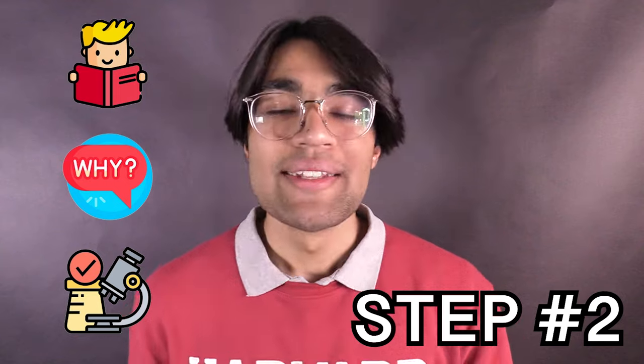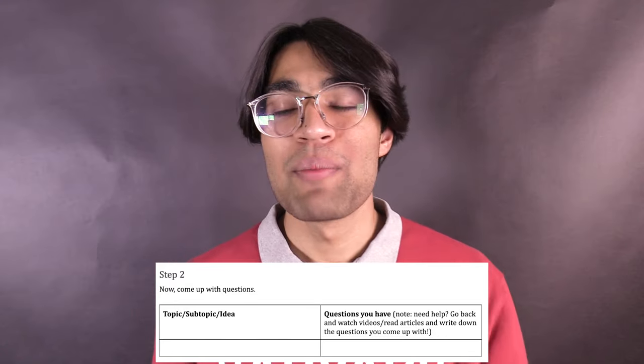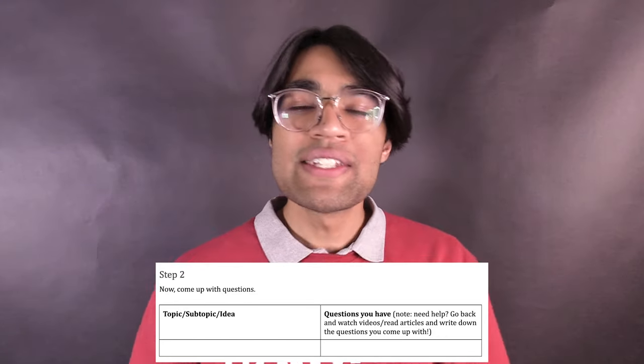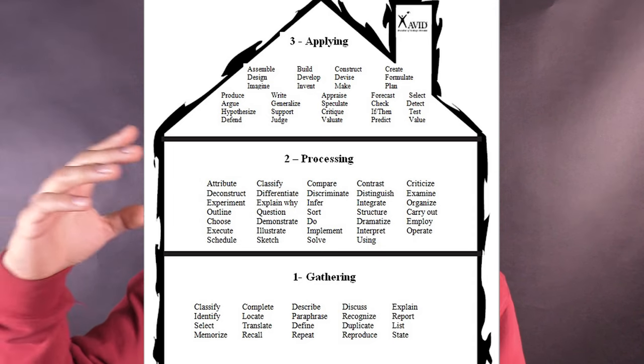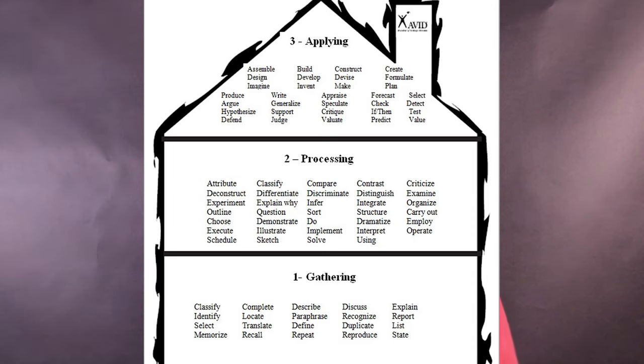Let's get into step number two. Step two is to start coming up with questions. Now that you've created these mind maps and started consuming media, you're going to come up with questions based off of this consumption. These questions will eventually help you come up with a research project idea. These can be super basic and open-ended questions, but you should try to ask questions that are on higher levels of Costa's levels of questioning — and those are typically 'how' and 'why' questions, the types we associate with scientific reasoning and hypotheses.